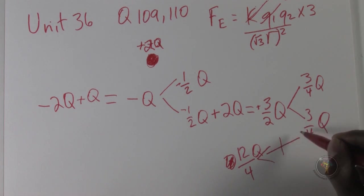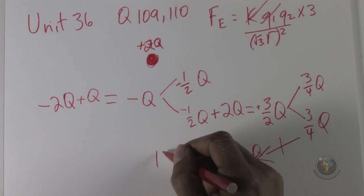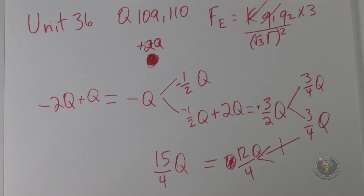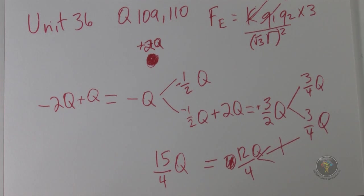We're adding to three quarters q, and that's going to equal 15 over 4 q. So we have positive 15 over 4 q, which is a combination of the previous sphere and a combination of T.